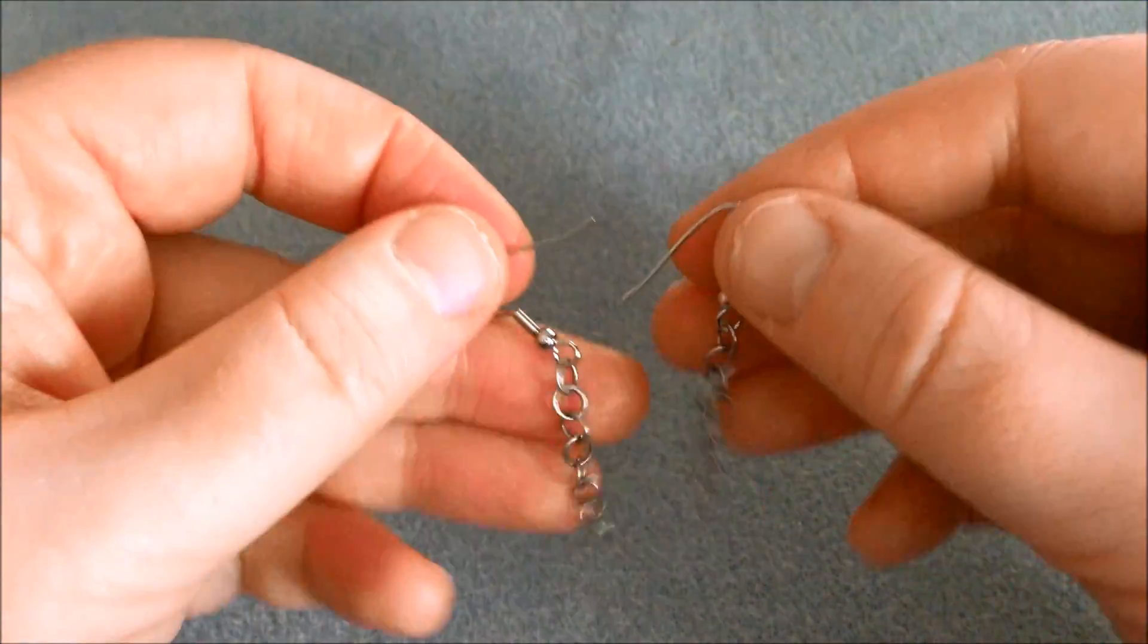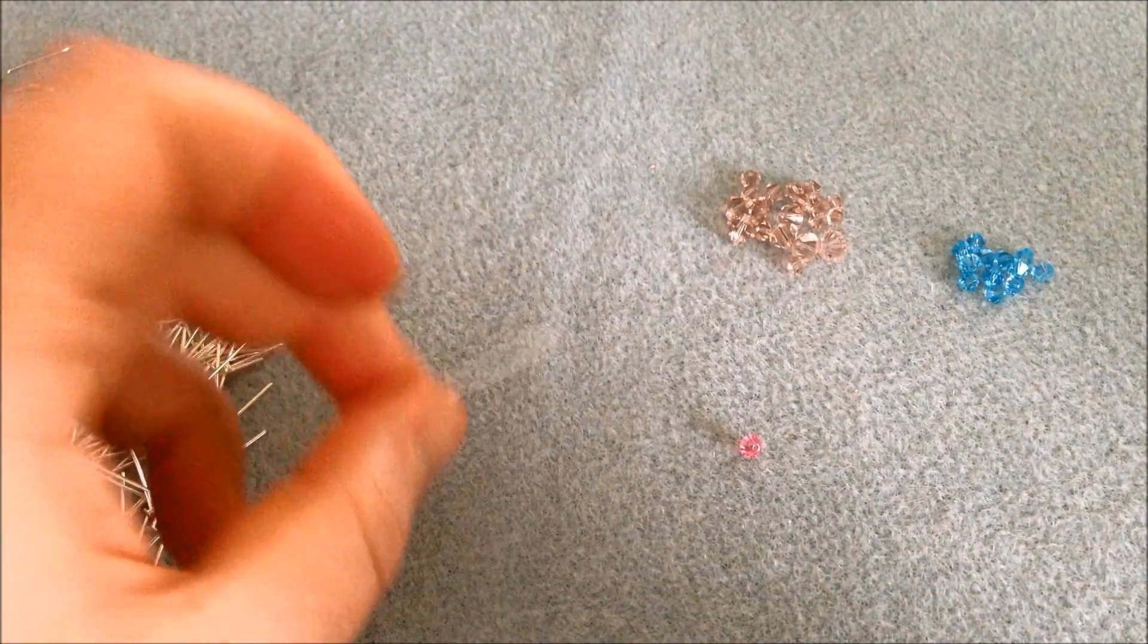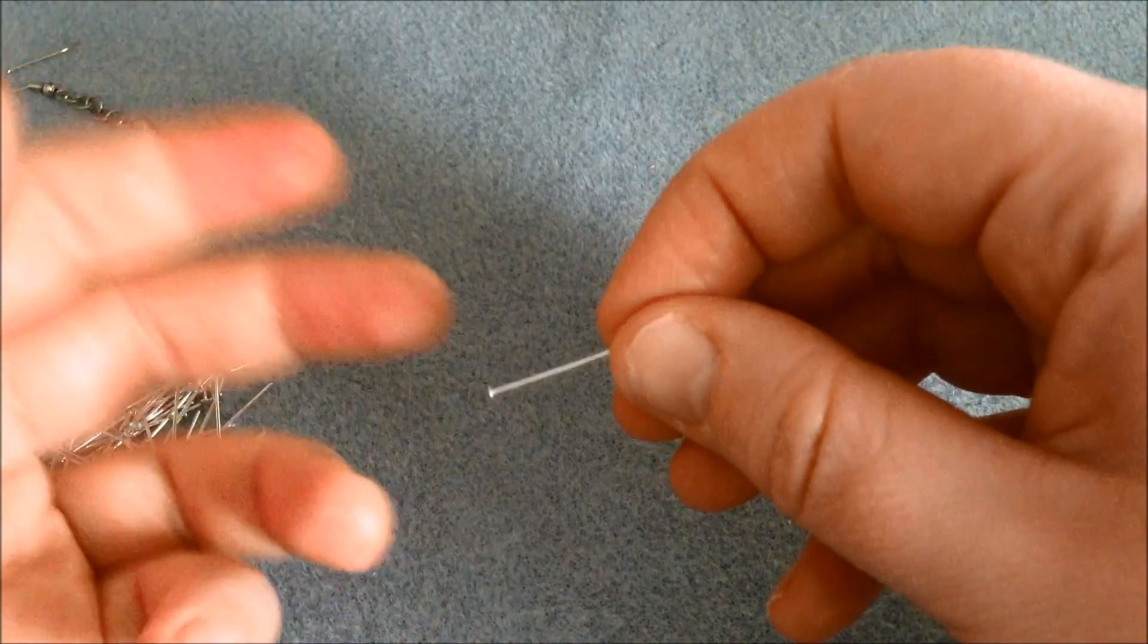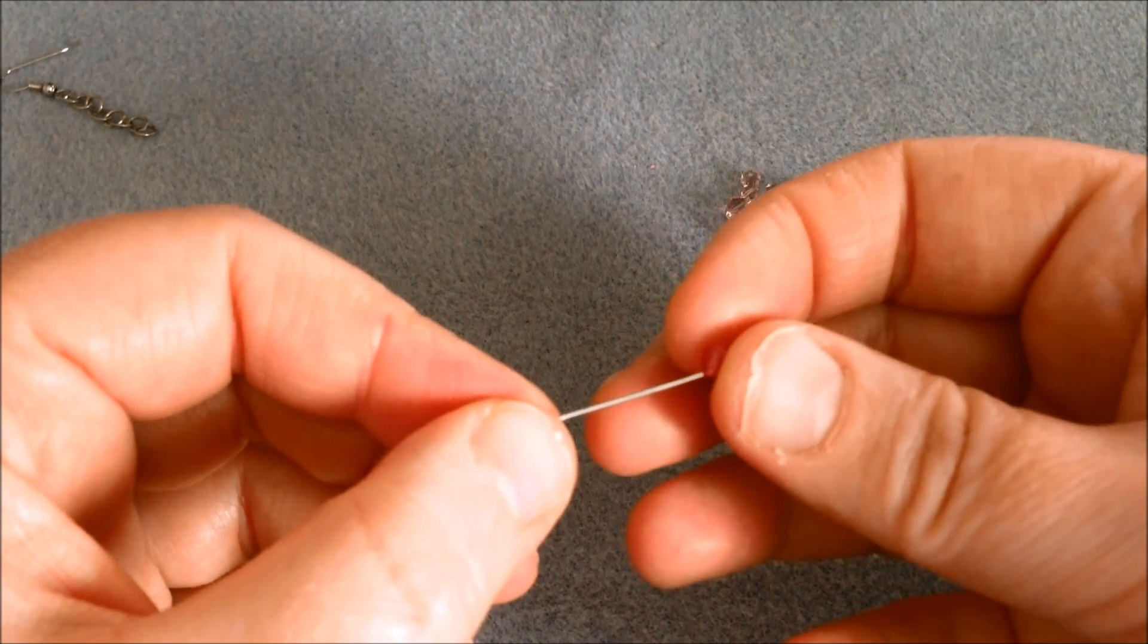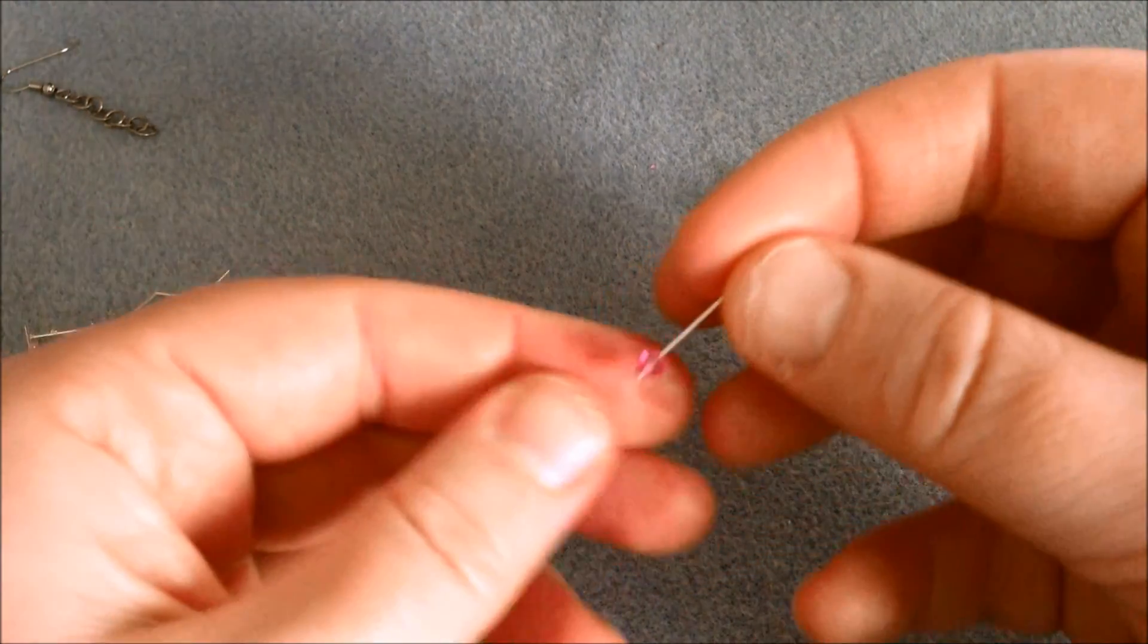So that's why I recommend doing this at the very beginning. So let's make the actual danglers then and for making those you need one head pin and one crystal. Slide the crystal onto the head pin just like that.